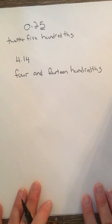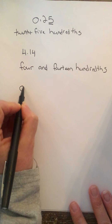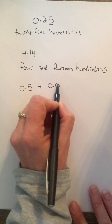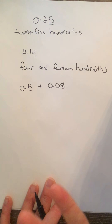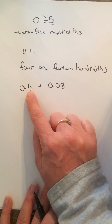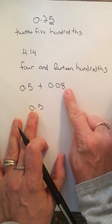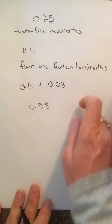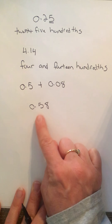Sometimes on your quiz or your assignment, I'm going to have it already in expanded form and ask you to write it in standard form. You just go back — this means five tenths, so I'm going to make sure the five is in the tenths place. And this means eight hundredths because the eight is in the hundredths place. So this is how you write that expanded number as a standard decimal.